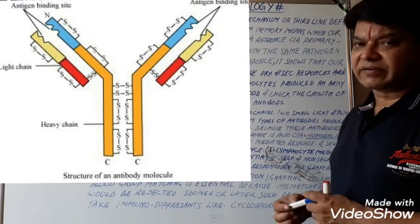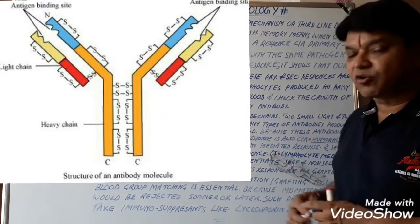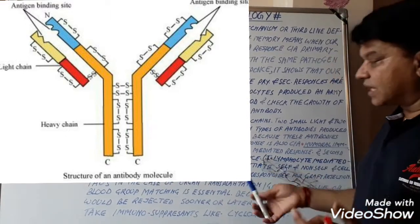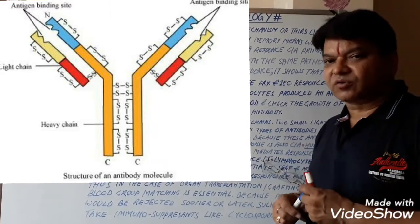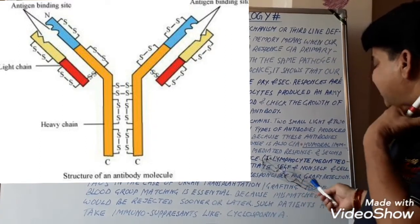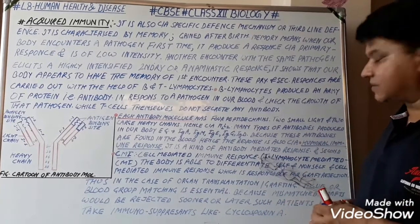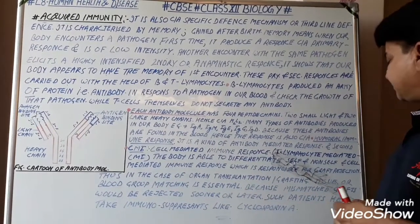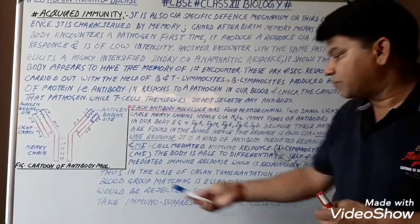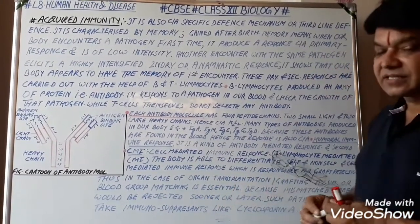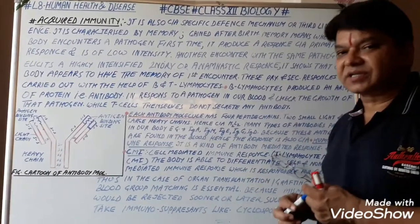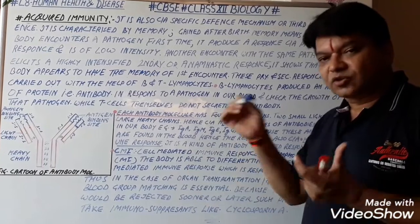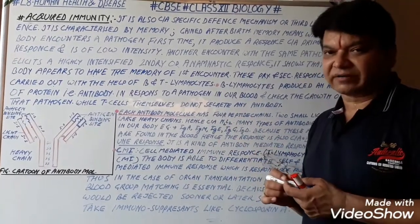Whenever any organ transplant is carried out in the body, if our immune system does not accept the cells, blood, or that particular organ, the situation is called graft rejection. Thus, in the case of organ transplantation or grafting, tissue or blood group matching is essential. The donor and recipient must have the same blood group; only then can organ transplant or grafting be performed.